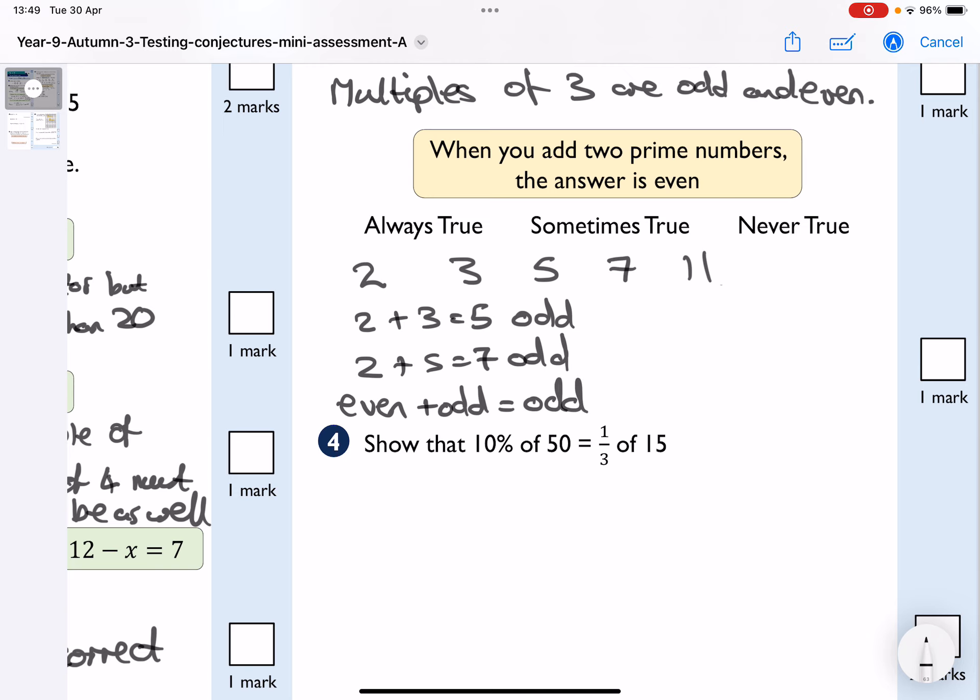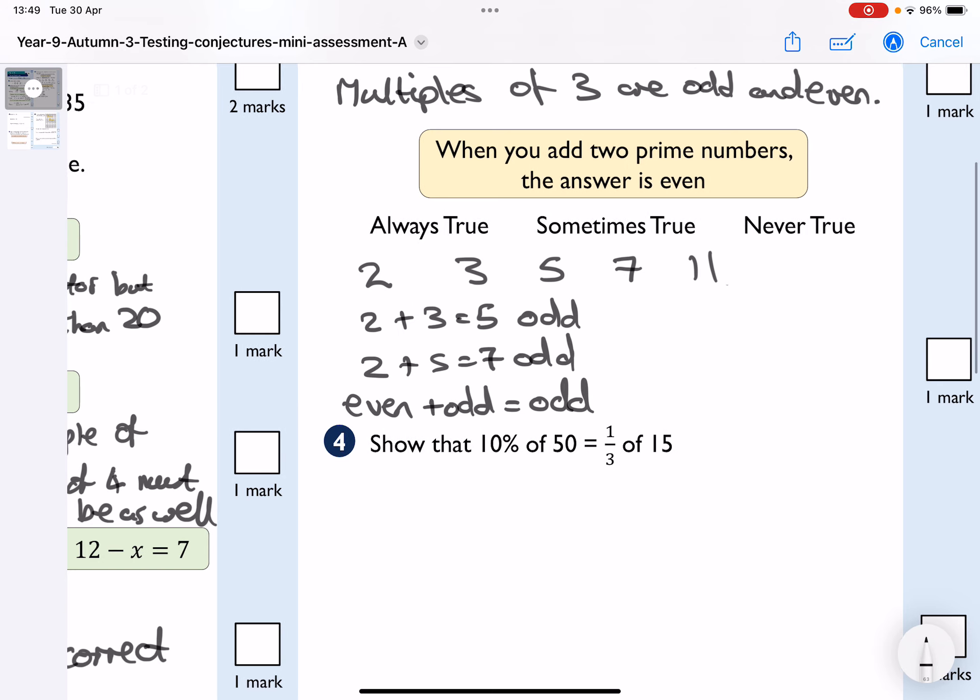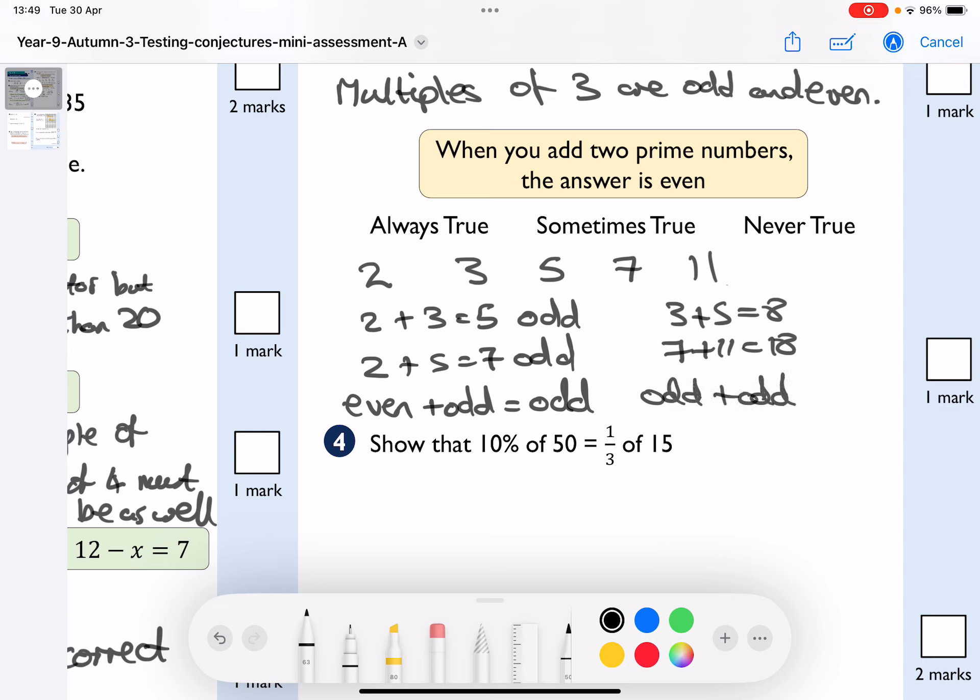Okay. However, if we then look at just the odd numbers, so three plus five is eight. Seven plus eleven is eighteen. It's a fact that, in fact, odd add odd is always even.